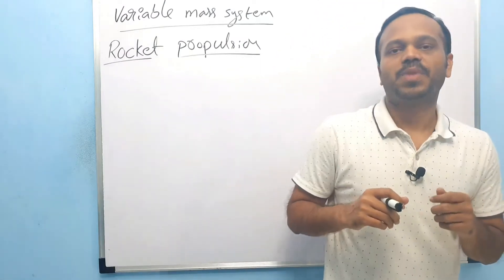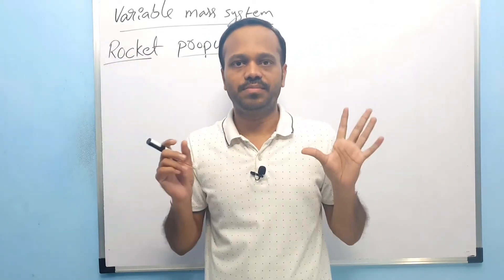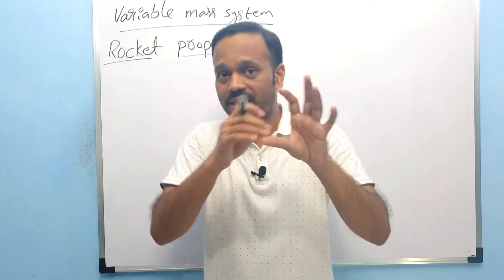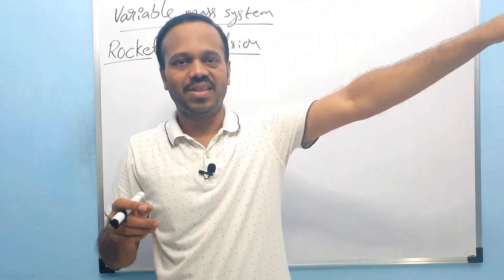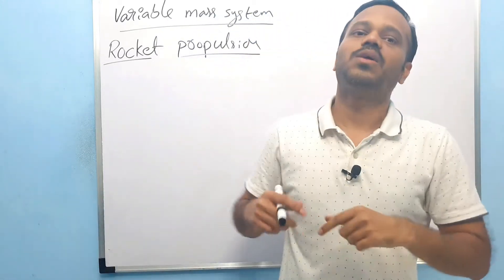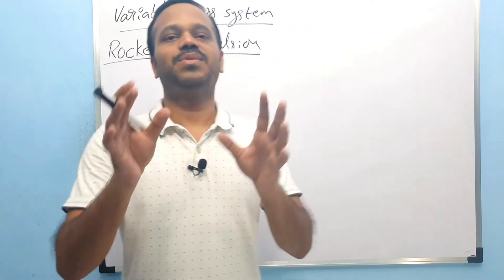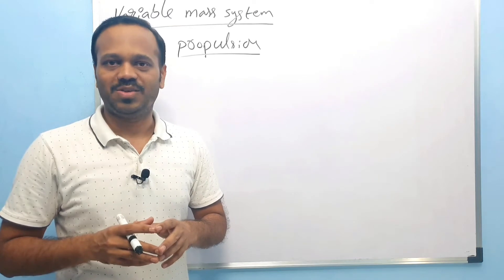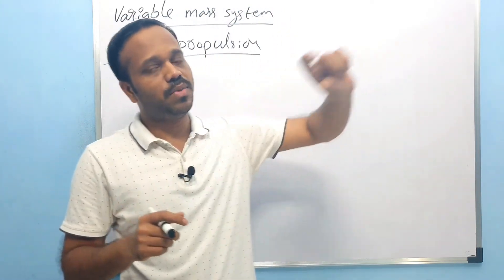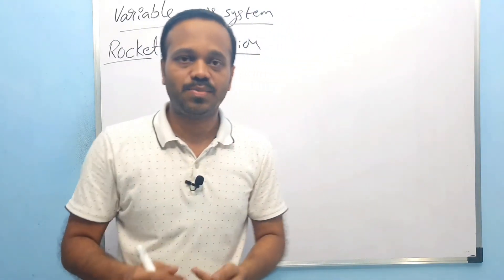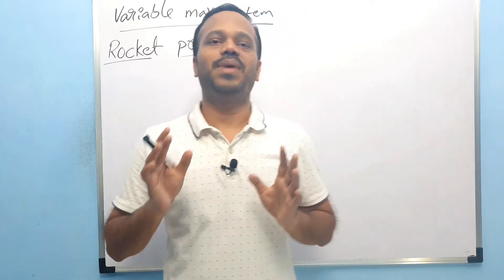Variable mass system — for example, if a balloon is full, it will eject the gas. As the balloon ejects gas, its mass continues to change. You can add and remove mass from the system. A system whose mass changes like this is called a variable mass system.